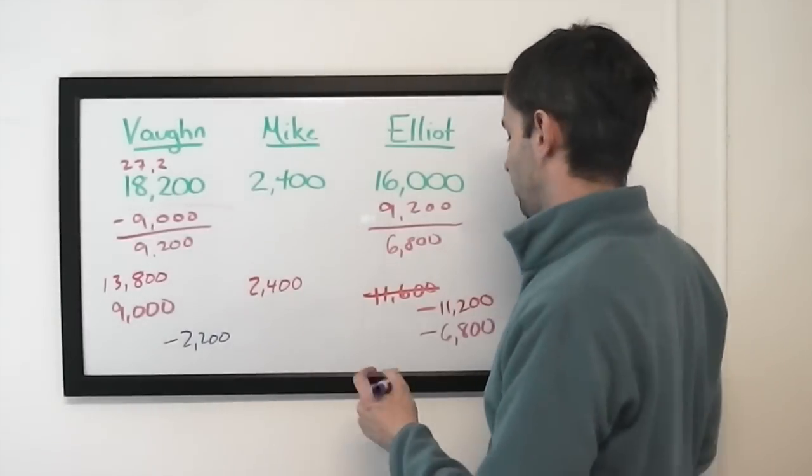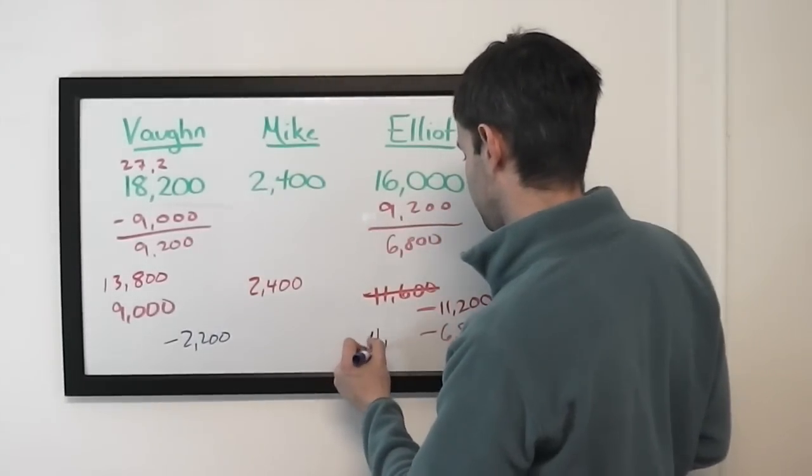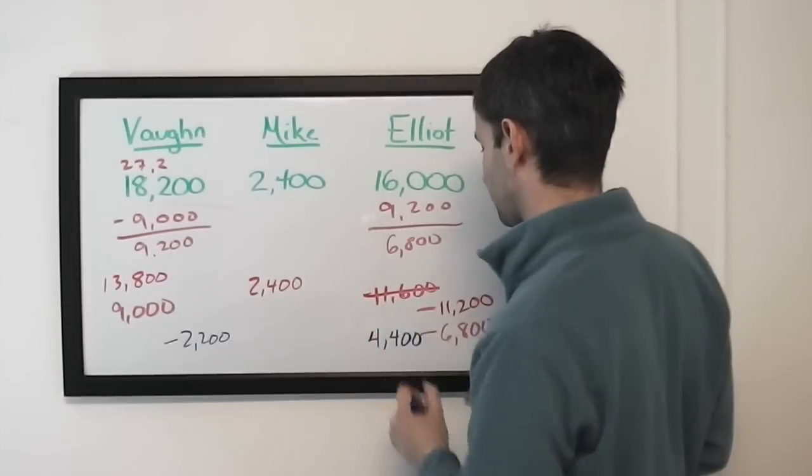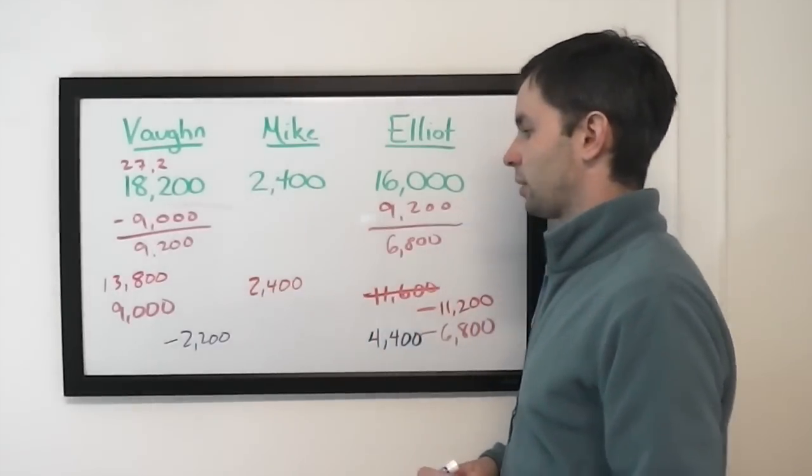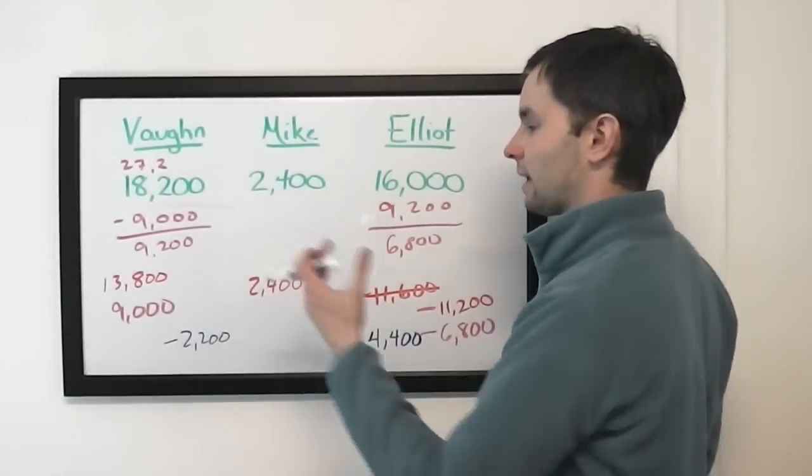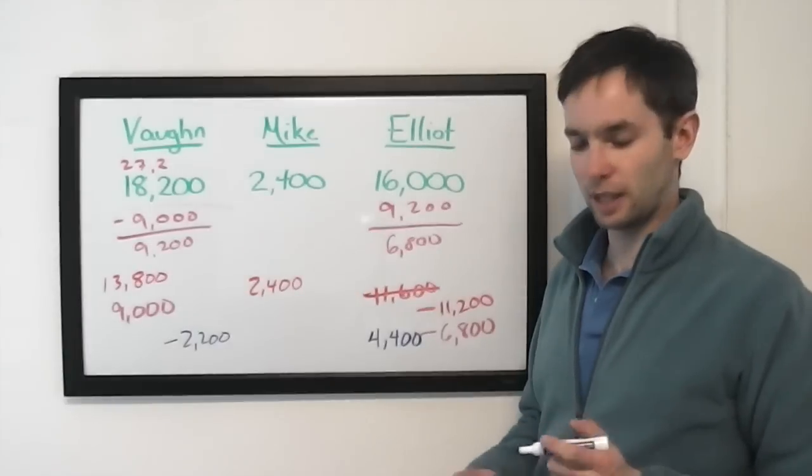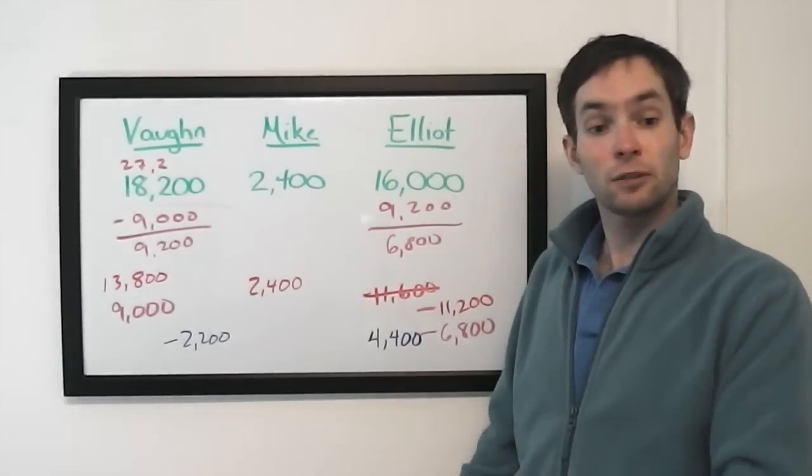And to cover that, Elliott will want to wager 4,400. And of course the last thing we do is any minimum wager that we can, we add $1 to, any maximum wager that we can, we subtract $1 from.